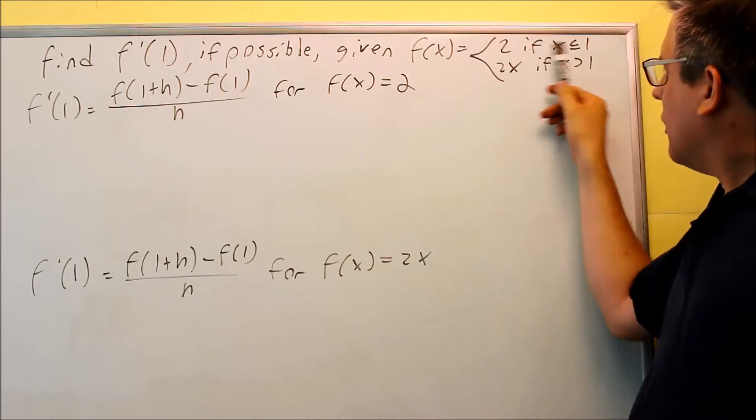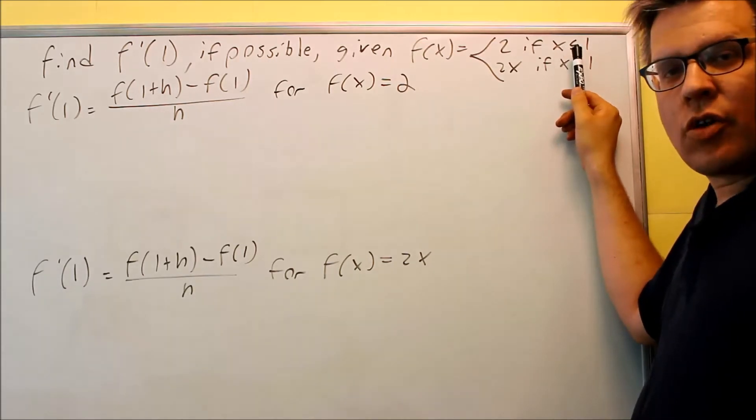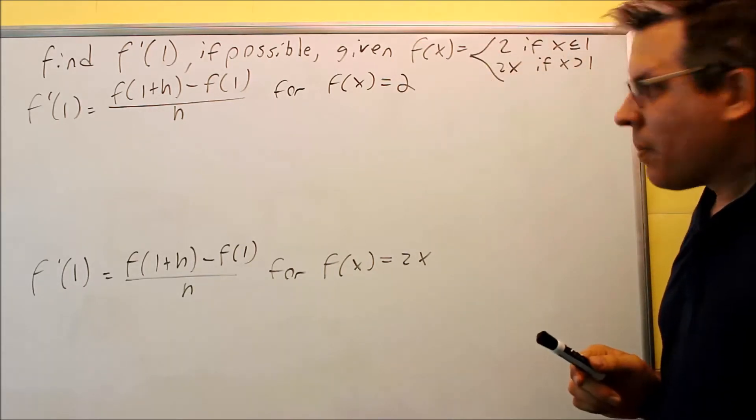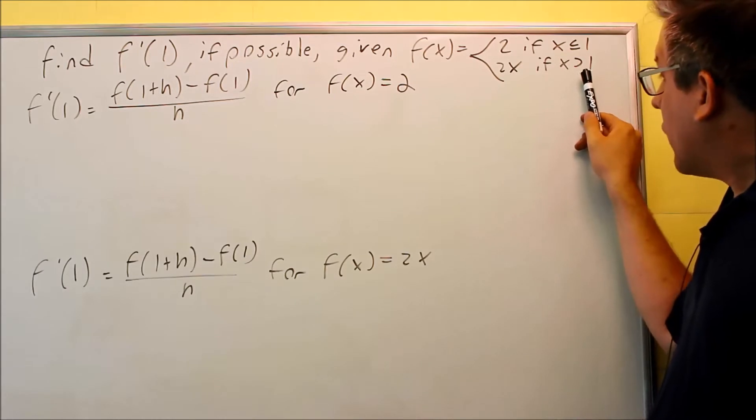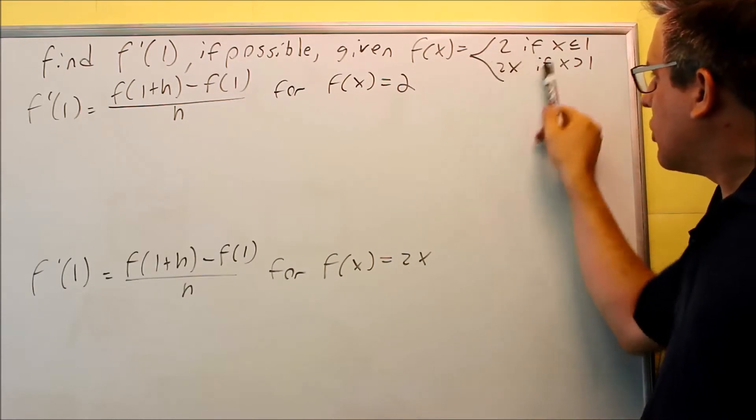Piecewise works to where if my x values are less than or equal to 1, I'm only going to use the first function. If my x values are greater than but not equal to 1, I'm going to use the second one.